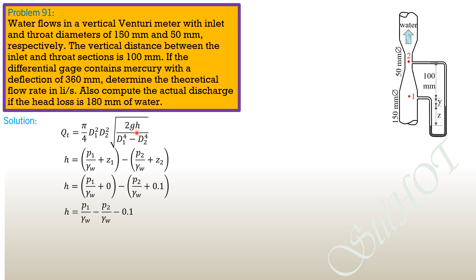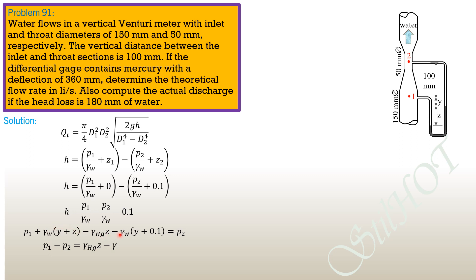Summing pressure from point 1 to point 2: P₁ + γ_water(y + z) − γ_mercury(z) − γ_water(y + 0.1) = P₂. After simplification, γ_water·y terms cancel, giving: P₁ − P₂ = γ_mercury·z − γ_water·z + γ_water × 0.1.